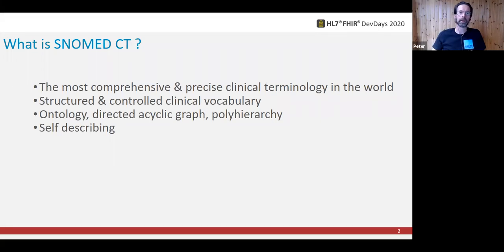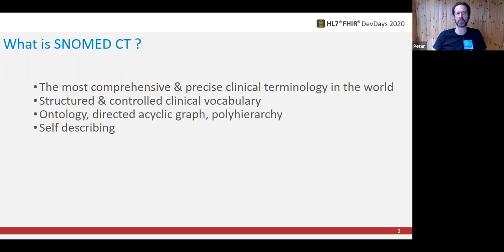SNOMED is a poly hierarchy — you could call it a directed acyclic graph if you want to hold your own against computer scientists. Each concept can have many parents; each concept can be many types of things at the same time. So it's not a classification system like ICD, where a code can only belong in one particular bucket. Classifications like that are really good for statistical reporting, but it doesn't represent real-world complexity, like a concept such as acute renal failure due to procedure. Is that a disorder of the kidneys or potentially an indication of medical malpractice? Well, it's both at the same time.